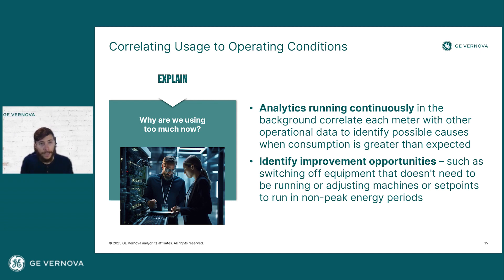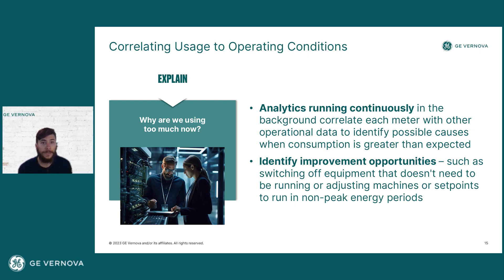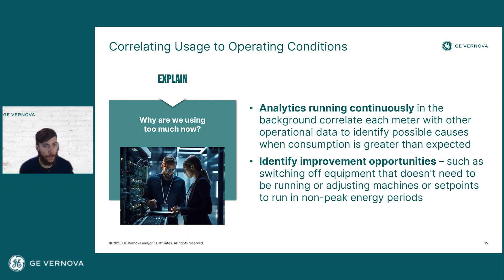That next value dimension is explaining why consumption is too much the way it is. Analytics can run continuously in the background, correlating those consumption sources with the rest of the operational data being generated on the manufacturing floor, helping to identify the sources of consumption and the possible causes — the relationships between consumption and variability that exists when different production events occur. This helps identify where improvement opportunities are, like equipment that may have been left on, machine points that aren't quite optimal, or opportunities to adjust operating conditions in peak and non-peak periods to minimize consumption and therefore cost.